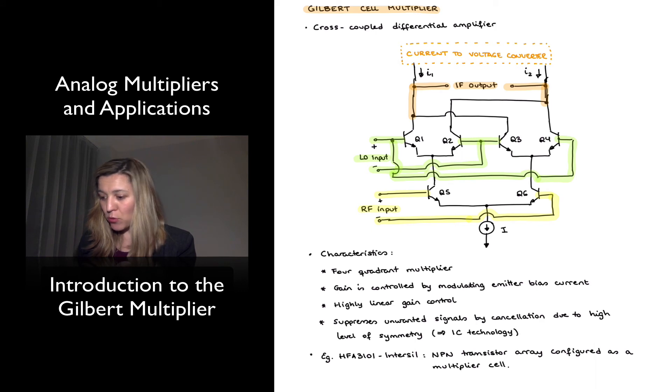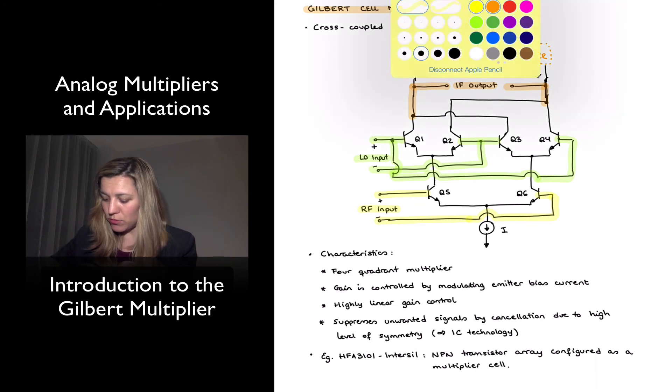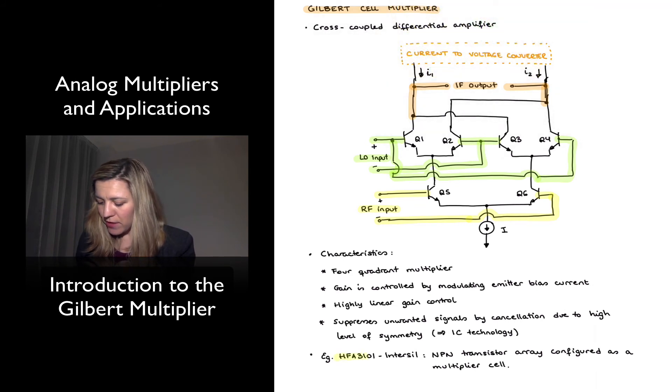If you want to look at an example of an IC multiplier, this would be a good one to take a look at. This is the HFA3101 from InterSeal, and it is an MPa transistor array, which is configured as a multiplier cell, so you can see how the connections are made internally to come up with a multiplier cell.